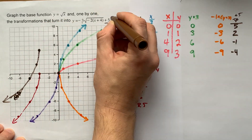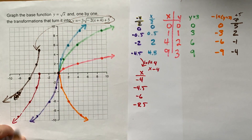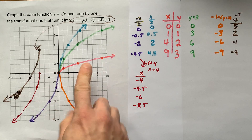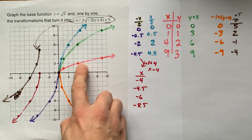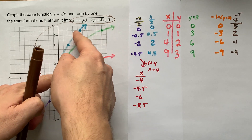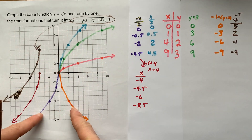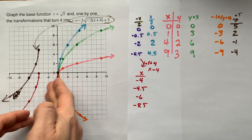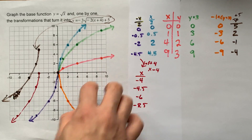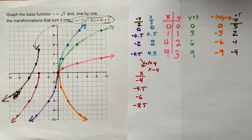This final curve is the fully transformed version of y equals square root of x. The six effects were: make it three times taller, half as wide, apply a vertical reflection, a horizontal reflection, shift it left 4 units, and up 5 units. Best of luck, my friends.